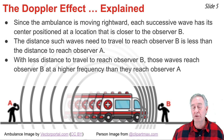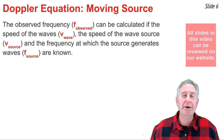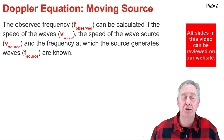A mathematical formula known as the Doppler equation can be used to calculate the frequency that an observer observes, as long as you know the speed of the source, the frequency of the source, and the speed at which waves travel.